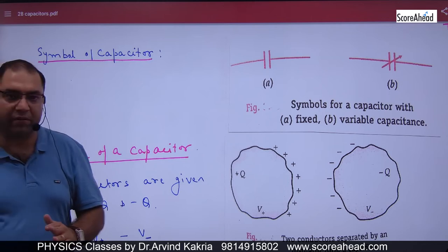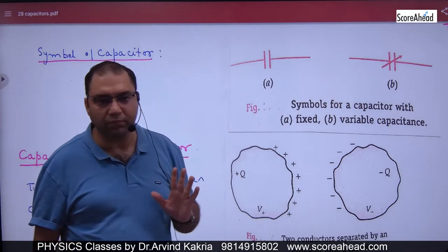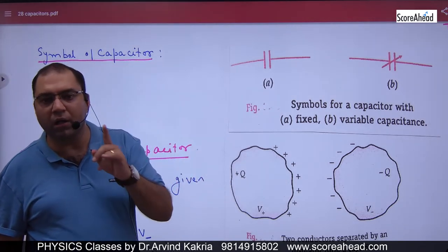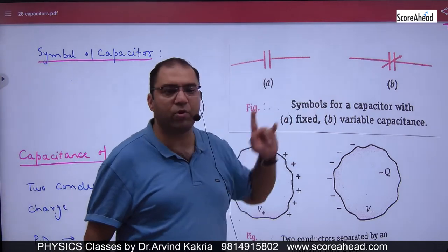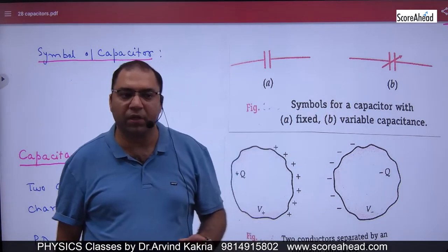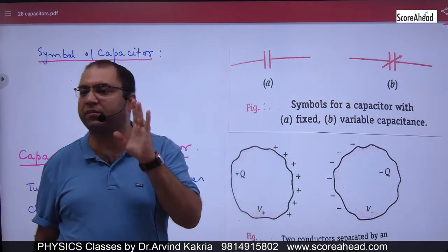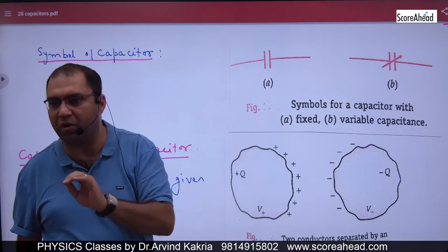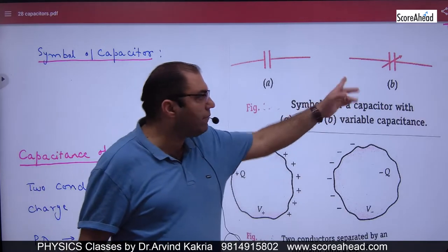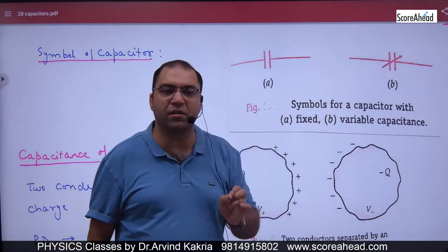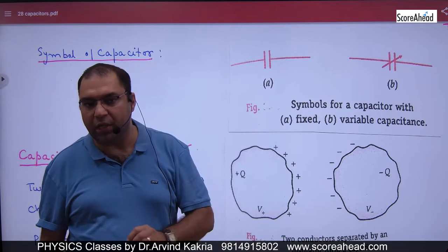The parallel plate capacitor symbol can appear in two forms. One symbol represents a capacitor with a fixed capacitance — a constant C value. The other symbol represents a capacitor with variable capacitance, where the capacitance can change.